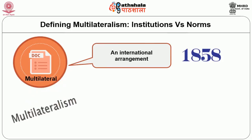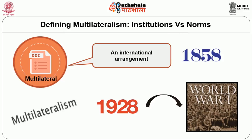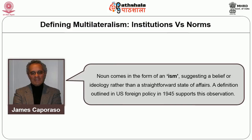The first documented use of the term 'multilateral' to describe an international arrangement dates back to 1858, whereas the noun form 'multilateralism' only came into use in 1928, in the aftermath of the First World War. James Caporaso points out that the noun comes in the form of an '-ism', suggesting a belief or ideology rather than a straightforward state of affairs. A definition outlined in US foreign policy in 1945 supports this observation.